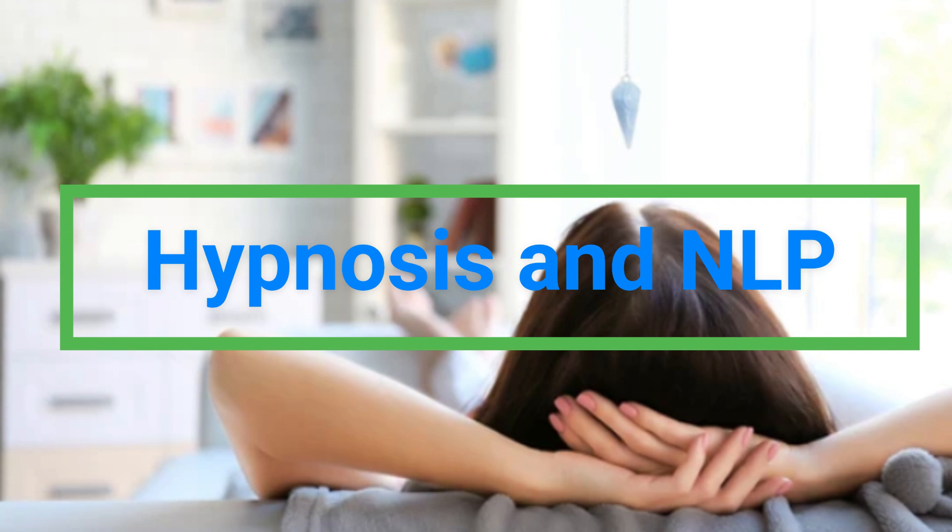NLP — neurolinguistic programming. Anchoring involves creating a specific stimulus, or anchor, that triggers a desired emotional or physiological response. To apply anchoring: identify the desired emotional state, such as confidence or calmness; choose a physical gesture, word, or touch as the anchor; and while the person is experiencing the desired state, apply the anchor — for example, touch their wrist — repeating this process several times to strengthen the association.